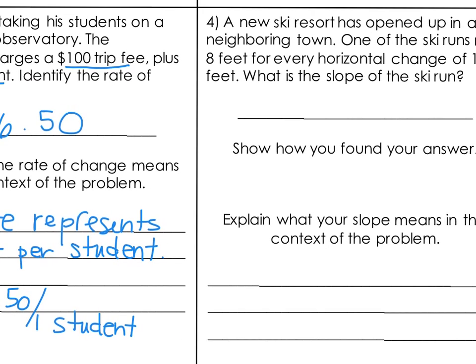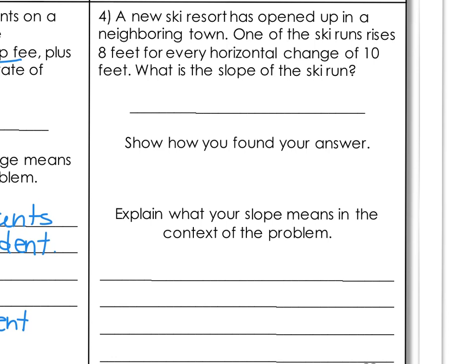Last example, number four: a new ski resort has opened up in a neighboring town. One of the ski runs rises 8 feet for every horizontal change of 10 feet. What is the slope of the ski run? Remember, rise is our change in Y and horizontal change is our change in X. So we do rise over run: 8 feet over 10 feet. Simplifying, the slope is 4 over 5.